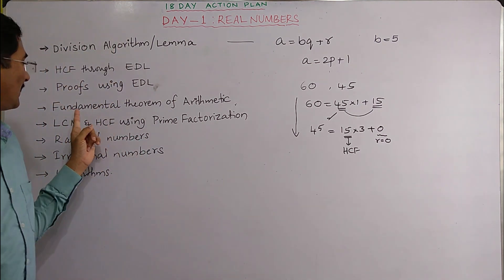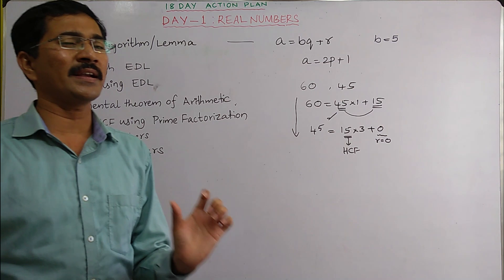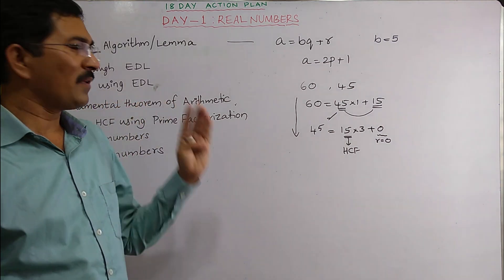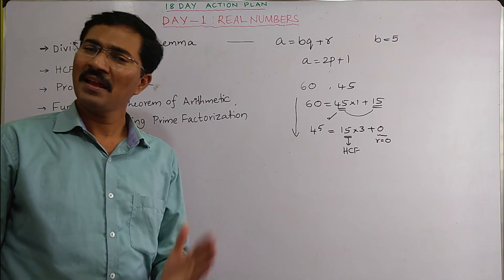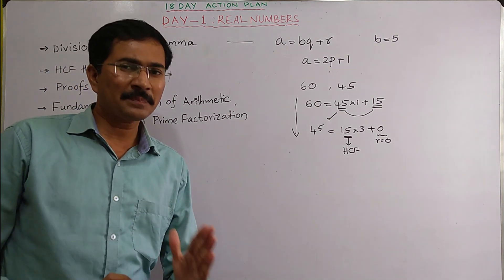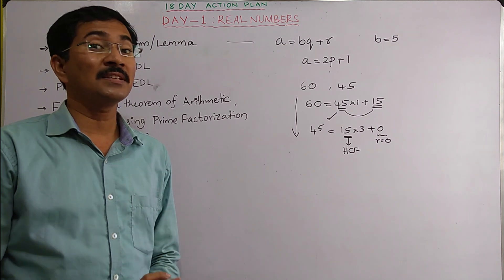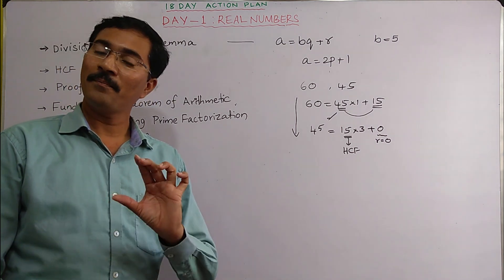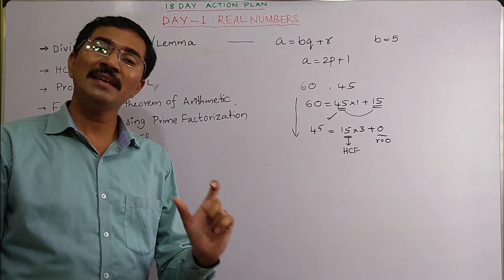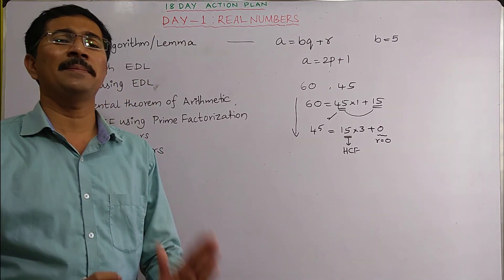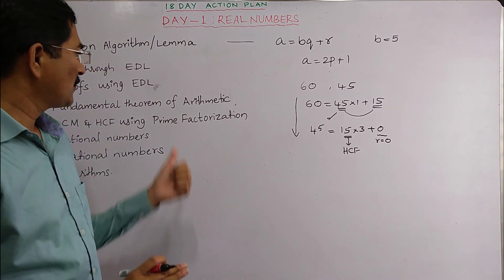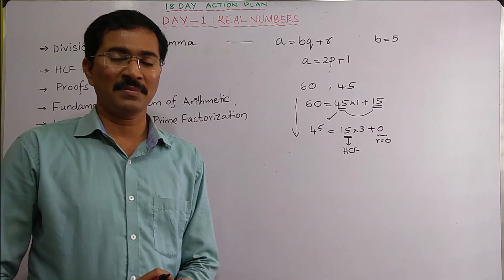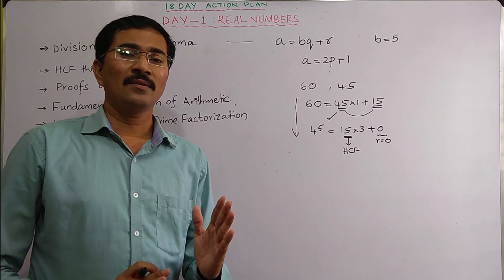Next we have another theorem called the Fundamental Theorem of Arithmetic. What does it say? It says every composite number can be expressed as a product of primes uniquely — their order may change but the primes are fixed for any composite number. For this you should know how to prime factorize, and what a composite number and a prime number are.